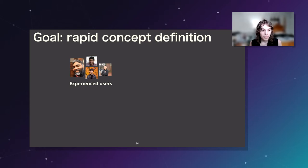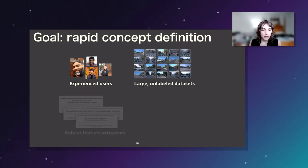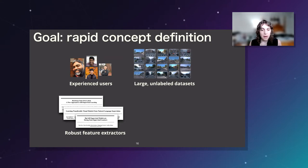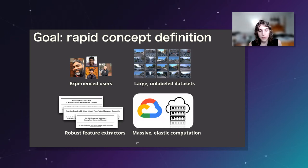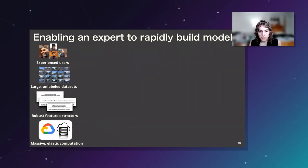Let's review what we're working with. We have experienced users — experts in whatever domain they're looking at — who want to get to a trained model. We have huge unlabeled datasets that are too slow to look through manually. Thanks to folks at Google, Amazon, and large research institutes including Stanford, we have generally available robust feature extractors that give us very good representations. We also have access to massive elastic compute because of cloud computing. Our long-term vision is to take these pieces and build an end-to-end system allowing a single expert to rapidly train models in a couple of hours of work — similar to what folks are doing at Snorkel. We've been calling our version of this system Forager.